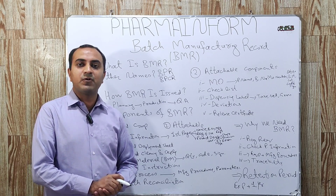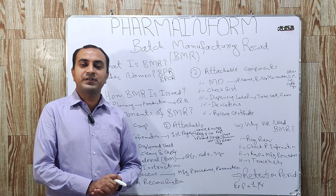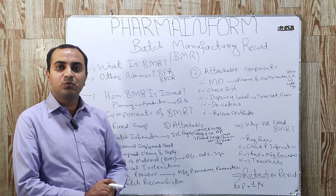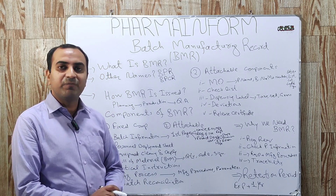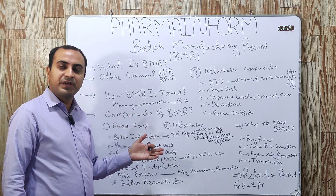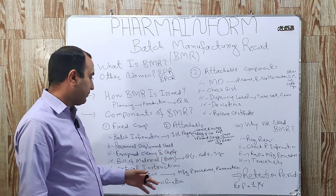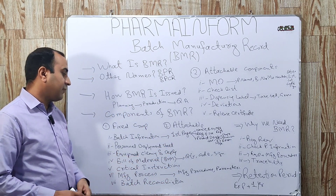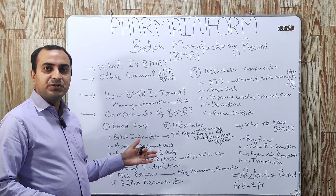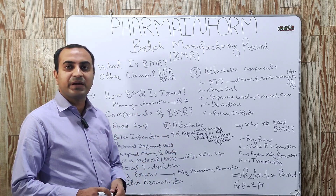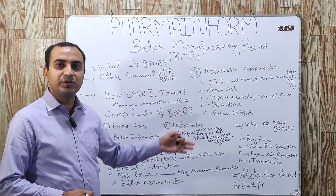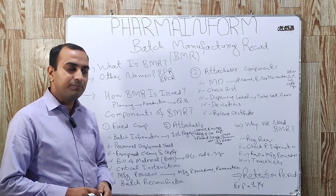The next fixed component is the personal deployment sheet. This sheet includes the names of personnel, including the qualified person, who are going to be involved in the manufacturing of the batch — meaning the names of all the operators and the qualified persons. The next one is the equipment cleaning and deployment sheet, which includes the cleaning status and the names of the equipment that are going to be used in the batch manufacturing process.